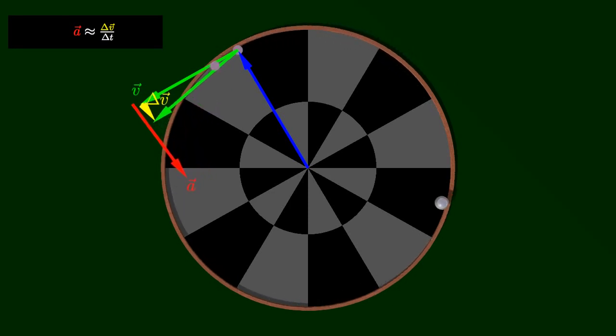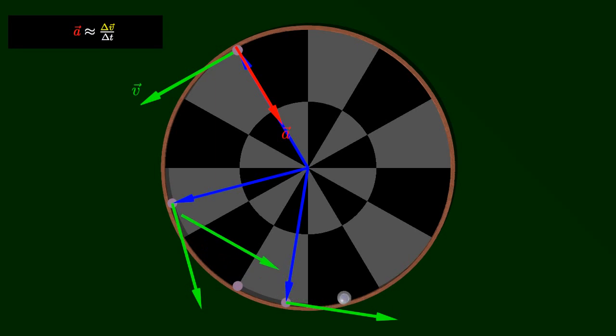The instantaneous acceleration is then the limit of this estimate as the length of the short time interval goes to zero. Note that the direction of the acceleration vector is always towards the center of the circle.